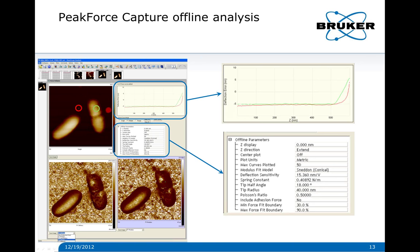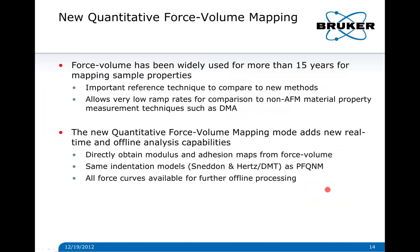Here's an example offline looking at peak force capture data for the same two bacteria. We have all of the curves — you can click anywhere on this image and see the curves at that point. This gives us opportunities: we can directly test the model, look at different models, and export these curves. You can also adjust the calibration parameters after the data has been captured — if you find out afterwards that your deflection sensitivity, spring constant, tip radius, or whatever was wrong, you can correct that. This makes it much easier to do comparisons between peak force QNM and other techniques such as force volume.